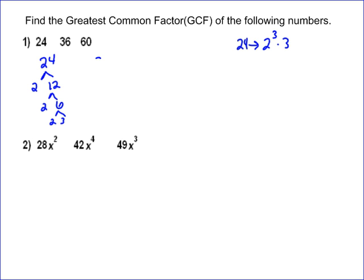Then we could do 36. 36, again, 2 times 18. And then 2 times 9. And then 3 times 3. So the prime factorization are these numbers. Which would be 36 is equivalent to 2 squared times 3 squared.